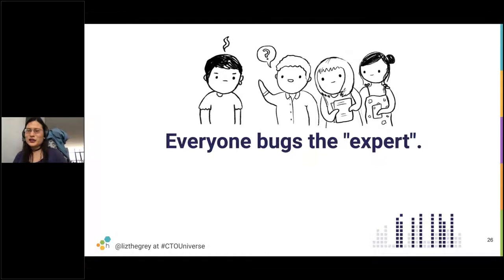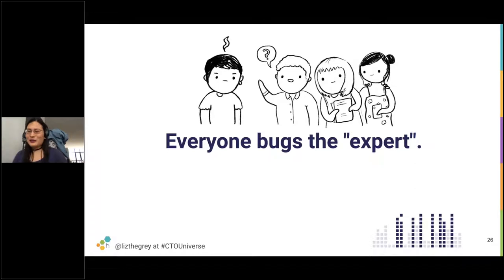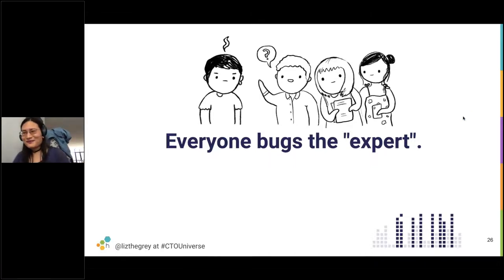You wind up in a situation where you as CTO are the responder of last resort — or maybe even first resort. Raise your hand: how many of you are the expert on your team still? Even though you're CTO, even though you've got VPs and managers and dozens of engineers, how many of you still understand how your systems are built? It looks like so far about 10% of our audience says they are still the expert.